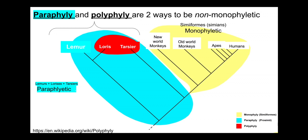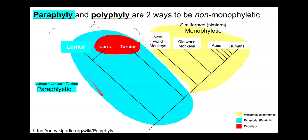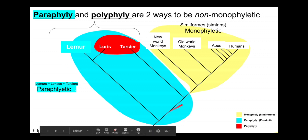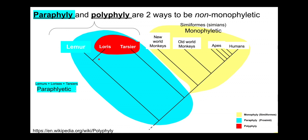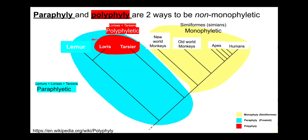Lemurs plus lorises plus tarsiers would be non-monophyletic. We can draw a circle around them — we have some taxa and their common ancestor, but we're excluding the descendants of that common ancestor. These three taxa together — lemurs, lorises, and tarsiers — are paraphyletic because we've got a group with its common ancestor but we're ignoring some of the descendants. Lorises and tarsiers grouped together just by similarities turn out to be polyphyletic because we are ignoring the evolutionary history.